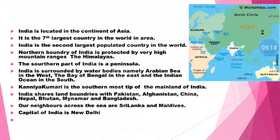India is the second largest populated country in the world. Population is the total number of people living in a country. We have got 1.39 crore people as population in India. The first most populated country in the world is China.